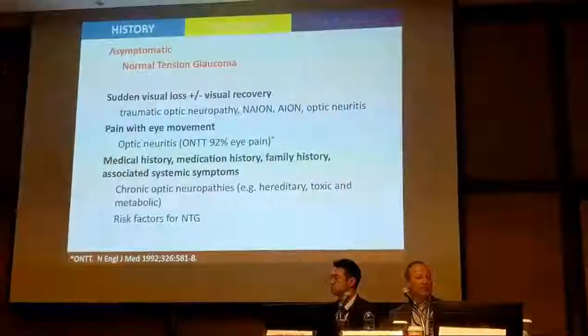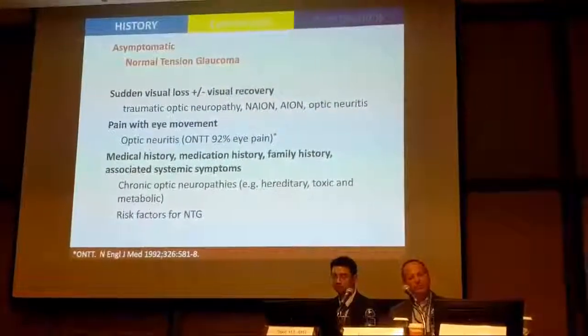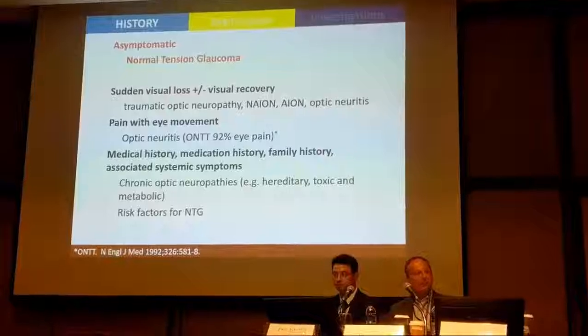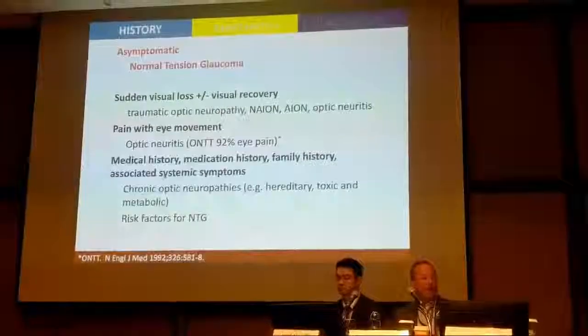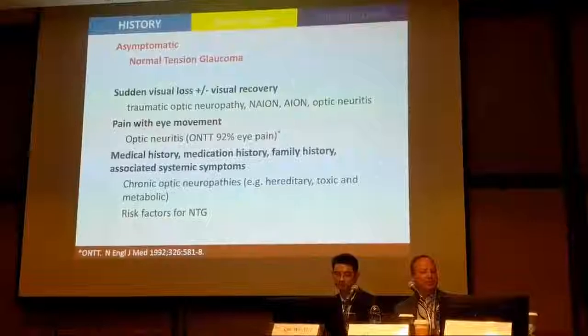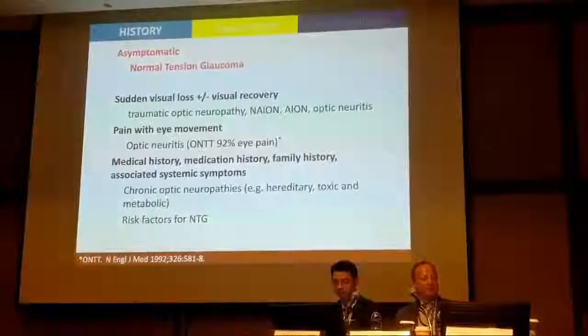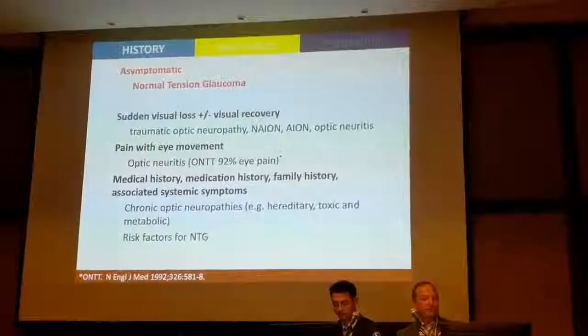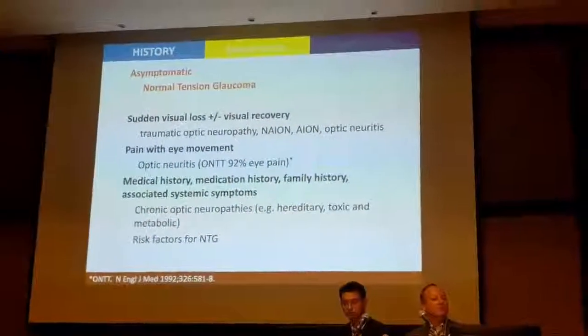Patients are referred because they have an incidental finding of pale discs, abnormal visual fields, or more recently abnormal OCT findings. This contrasts with other types of optic neuropathy like NAION, optic neuritis, and traumatic optic neuropathy, where there can be sudden visual loss with or without visual recovery, or with or without pain.